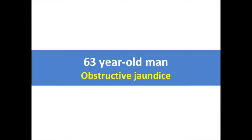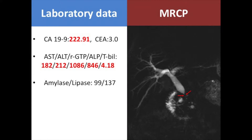This case is a 63-year-old male presented with obstructive jaundice. Laboratory data show elevated CA19-9 level, jaundice, and a cholestatic type hepatitis. MRCP shows distal CBD stenosis and upstream CBD dilatation.